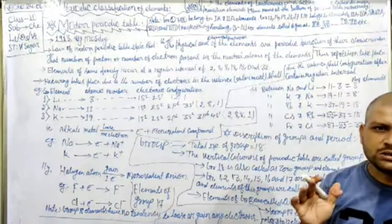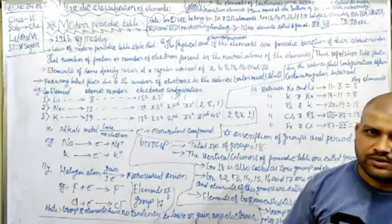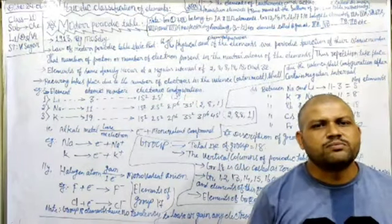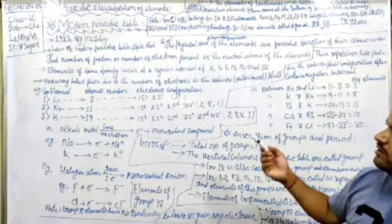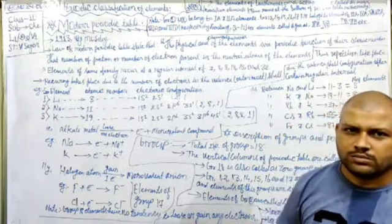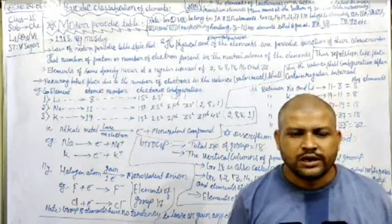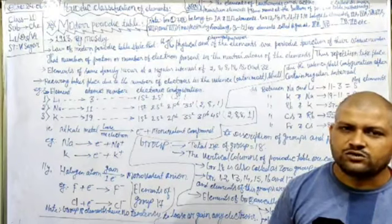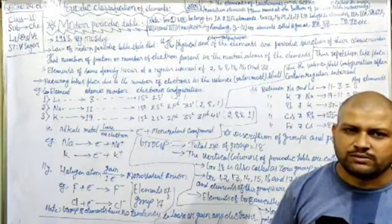This becomes the most confident law to arrange the elements according to the modern periodic table. You have to remember the statement of the modern periodic table. One question was raised during Mendeleev's periodic classification: why does repetition take place? It was not explained by Mendeleev. That was a great defect and drawback of Mendeleev's periodic table, due to which his periodic table was not accepted and was rejected.